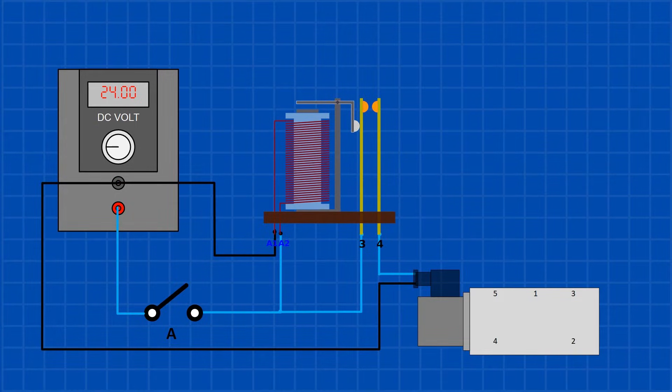We can use the relay to power other devices or connect its contacts to a different circuit. For instance, we could hook it up to a solenoid valve.